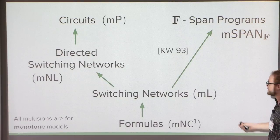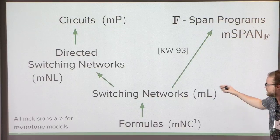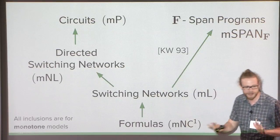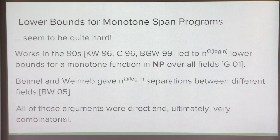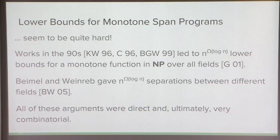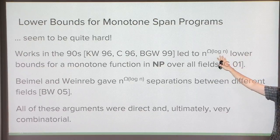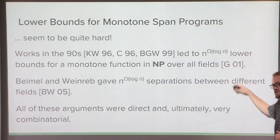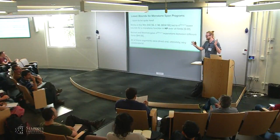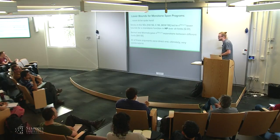In the non-monotone setting we actually know that span programs can simulate directed switching networks and are simulated by circuits. But in the monotone setting, this is basically the best set of inclusions that we have. Most of these inclusions are fairly trivial. If you're not familiar with a switching network or directed switching network, just think of it like a branching program — it's just a measure of space. The size of a span program is the number of rows, and we can always assume that by getting rid of linearly dependent columns.